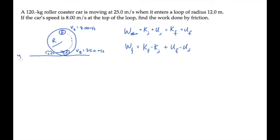Setting y equals zero on the ground, as usual, means there's no initial gravitational potential energy, and the work done by friction is the difference in the kinetic energies plus the final gravitational potential energy, where u sub f is mg times the final height, twice the radius.